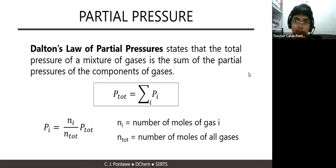So it has the formula P_total is equal to the summation of the partial pressures. And the partial pressure is further expressed as the number of moles of gas i, a certain gas i, over the total number of moles ng system of gases.